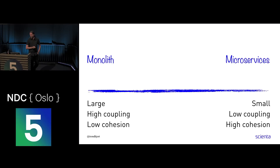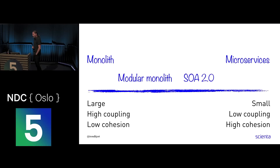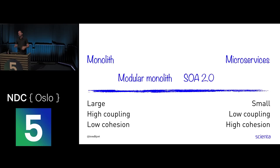In between these two extremes you have the modular monolith — like Simon Brown talks about. Why can't you start with a well-defined modularized monolith instead of running all the way to microservices? Could it be a stepping stone, or maybe you could be happy with a modular monolith. Or you could do something like SOA 2.0 — components that send events between them — which Gartner attempted to name. This is for those familiar with Udi Dahan and service bus, this event-driven thing.